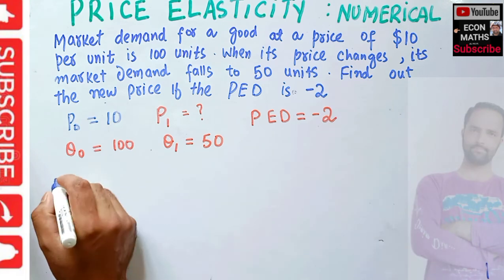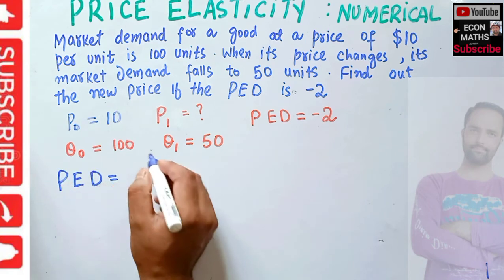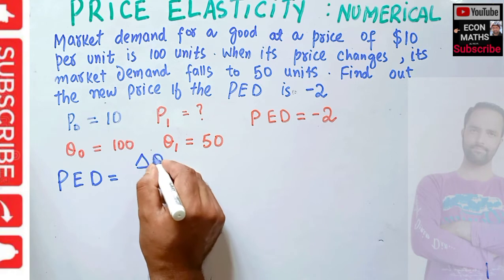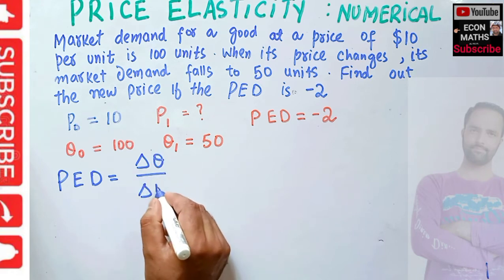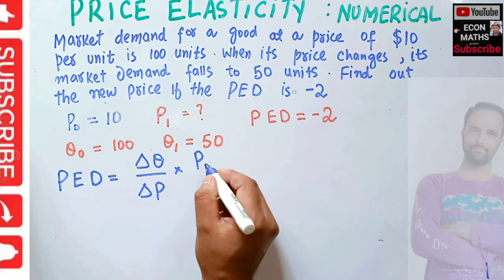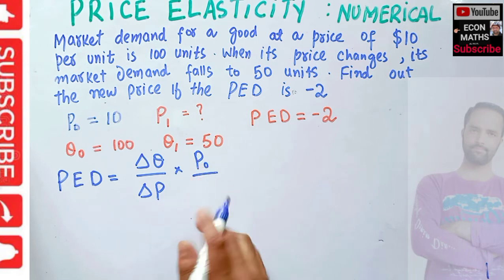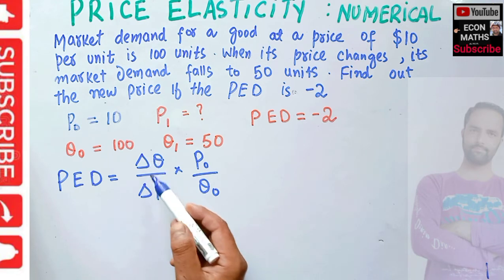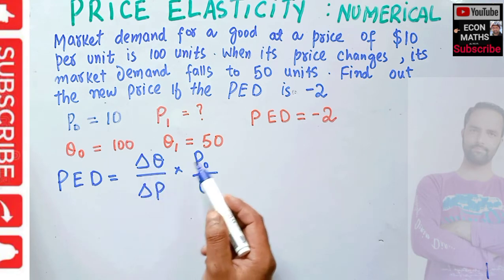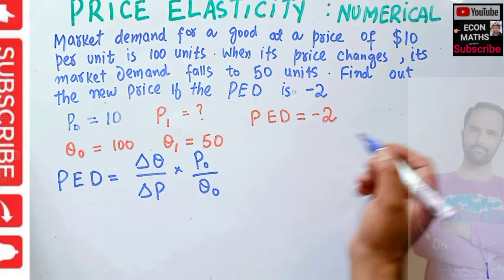We know that price elasticity of demand equals change in quantity upon change in price, multiplied by initial price upon initial quantity. That is: (ΔQ / ΔP) × (P naught / Q naught). This is the formula for price elasticity of demand.